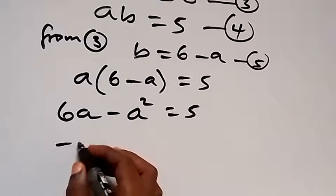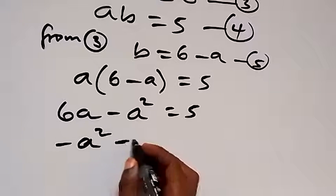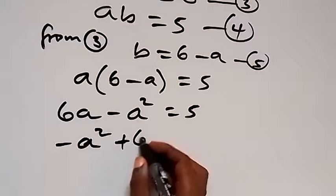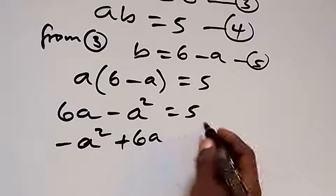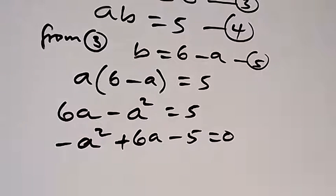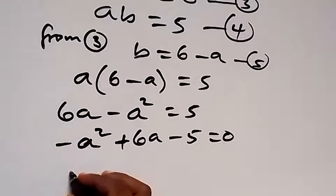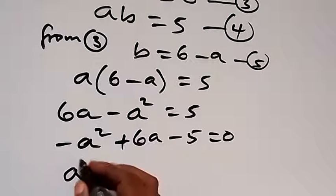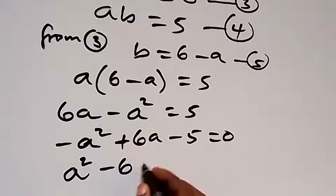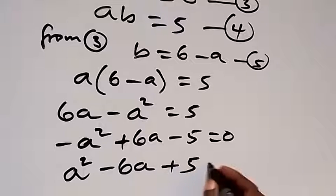Rearranging and bringing 5 to the other side gives us: minus a squared plus 6a minus 5 equals 0. Multiplying through by minus 1, we get a squared minus 6a plus 5 equals 0.